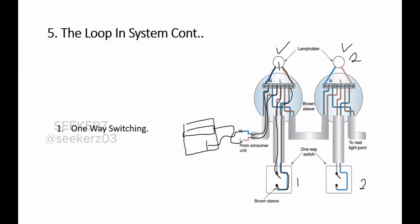Then we loop the wiring to the second lighting point. From the loop terminal we take the phase conductor and connect it to the loop terminal of the second ceiling rose. We also take the neutral conductor from the consumer unit and connect it to the neutral terminal of the second ceiling rose. Then the same wiring is done: we connect it to the second switch and the other side to the switch terminal, and from there we connect it to the second lamp.